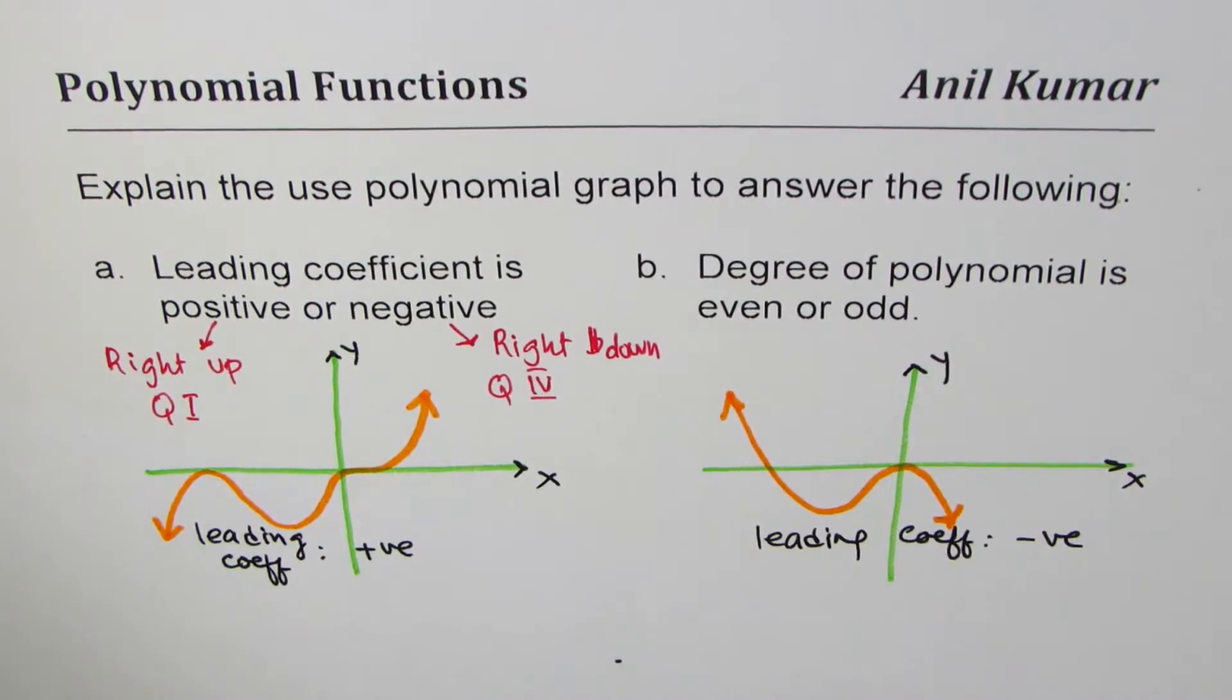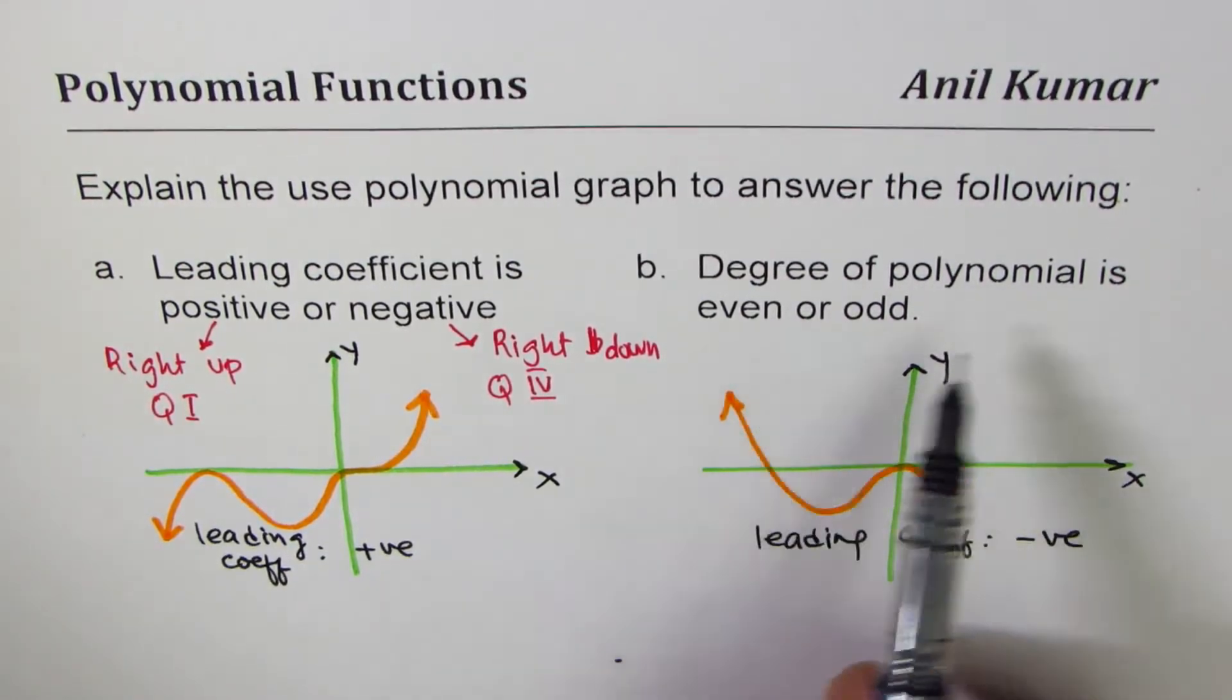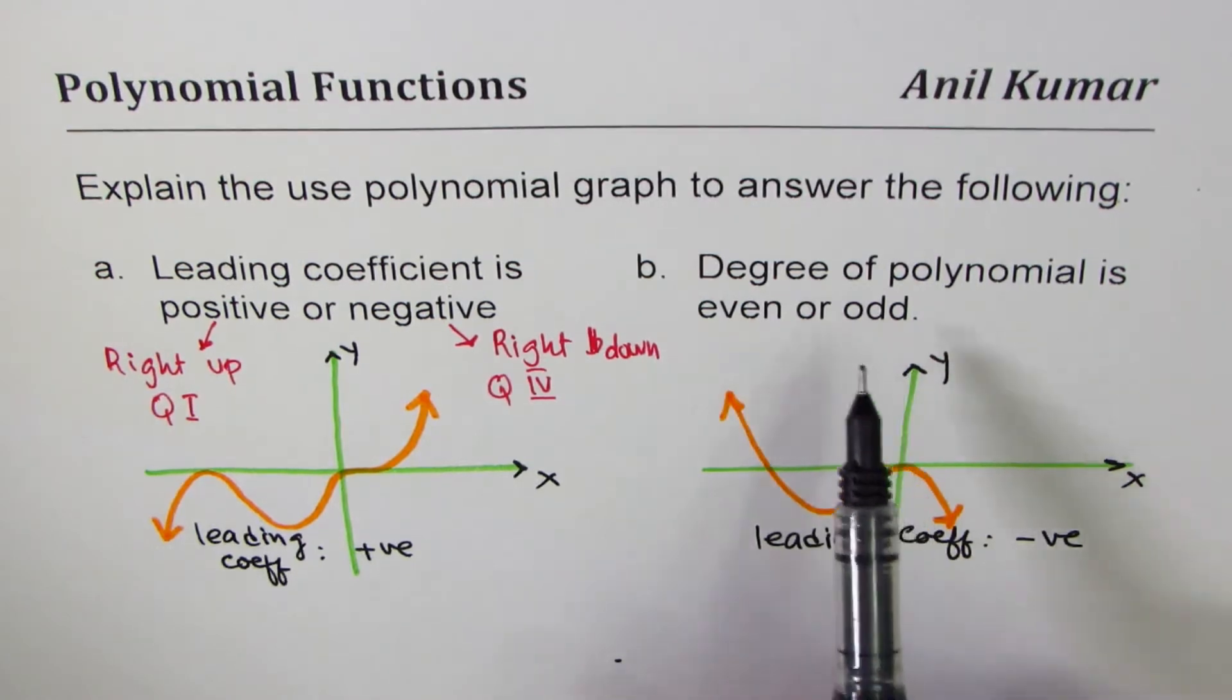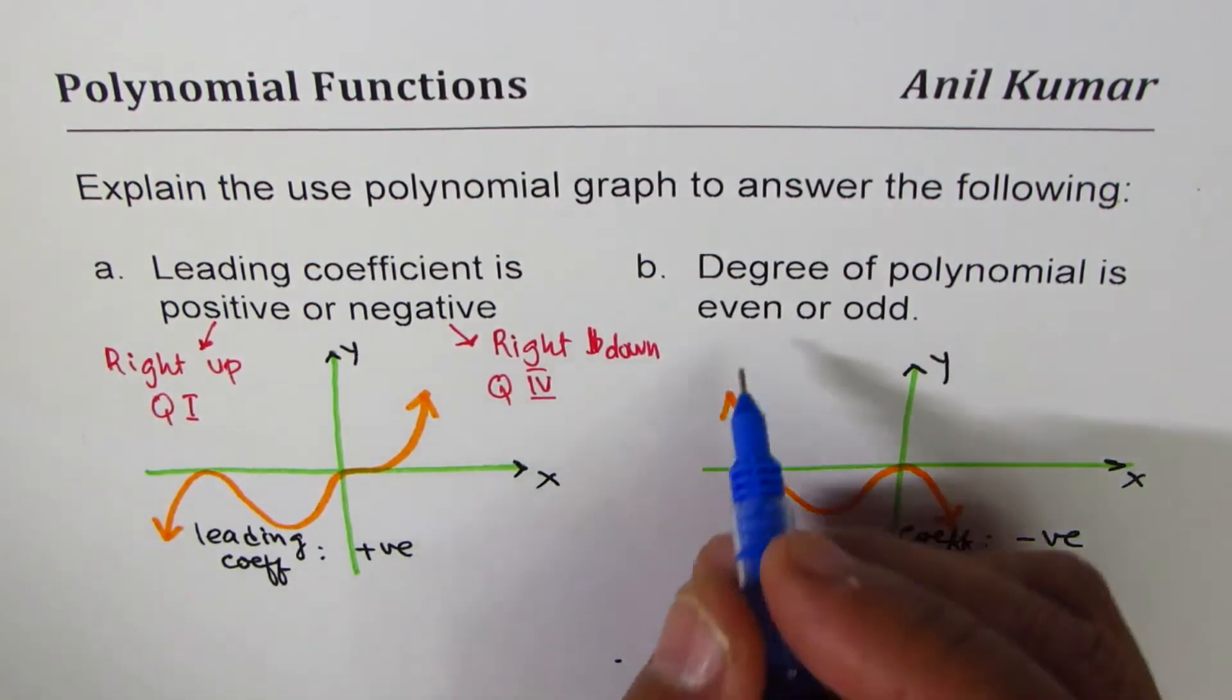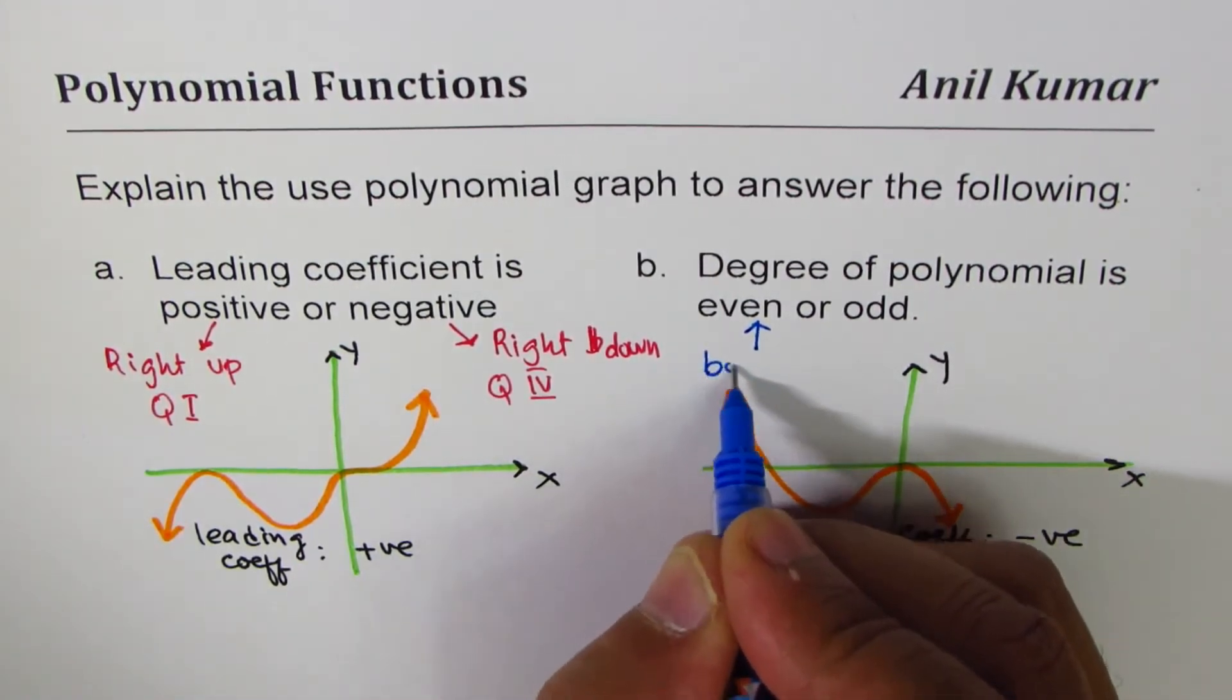Now let's look into this part B, which is degree of a polynomial, whether it is even or odd. For even degree, both are on the same side. So we have both same side.